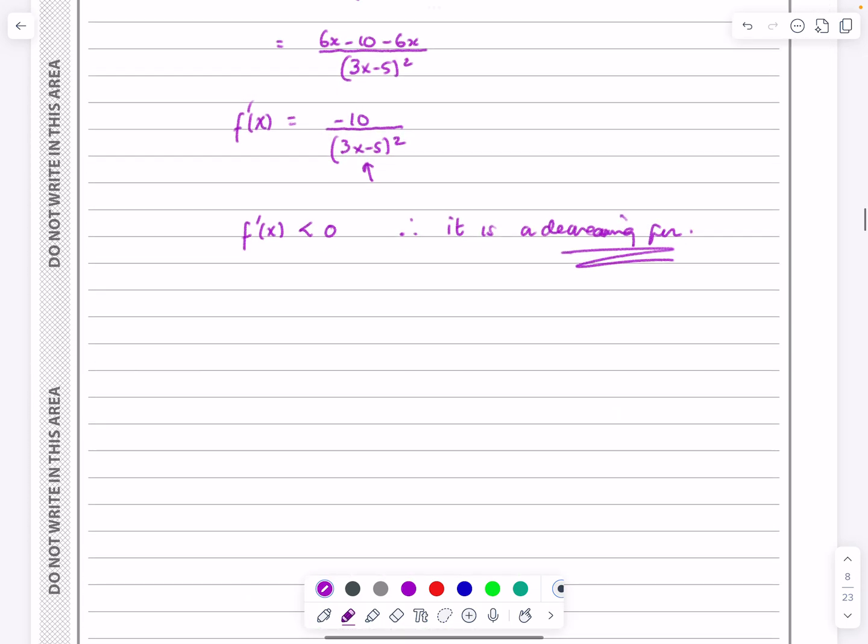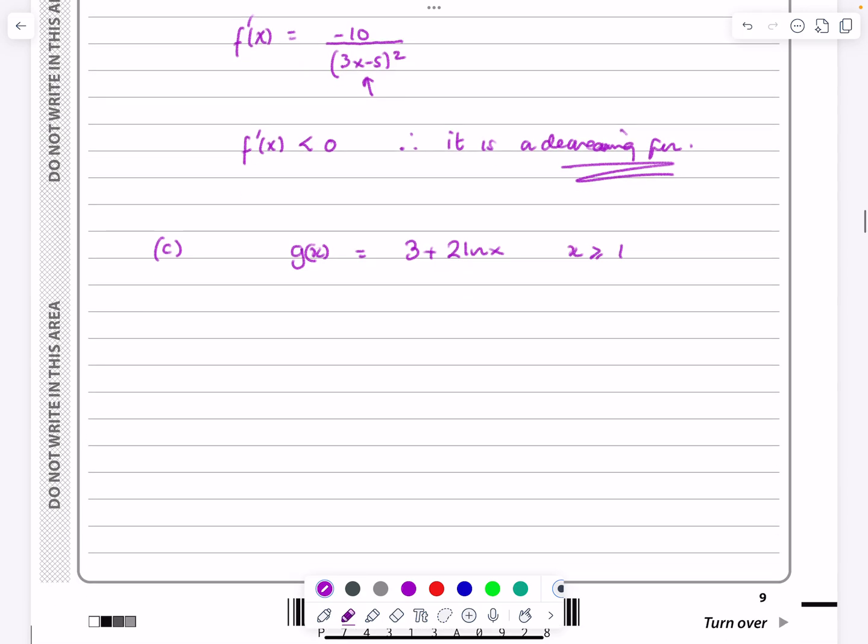Okay, so if we've got to find the inverse of g, part c, we've got that gx was equal to 3 plus 2 log x, where x is going to be greater than or equal to 1. So the way that we do these, say y is equal to 3 plus 2 log x, and now just rearrange to make x the subject.